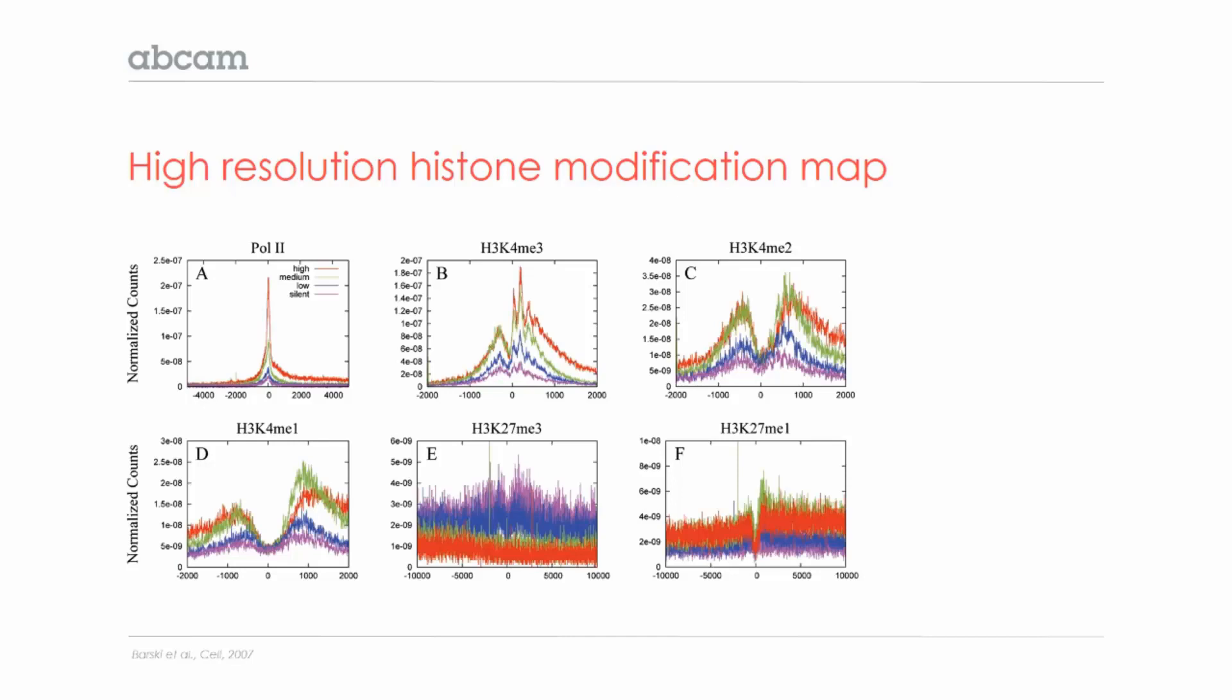We can see the binding of RNA polymerase 2 right at the transcription start site of the active genes, and if we look at the histone modifications, we can see a nucleosome-depleted region right at the transcription start site where no histones are bound, with the marks of activation H3K4-methylation present around the start site in active genes, and the mark of repression H3K27-trimethyl present at the silent genes.